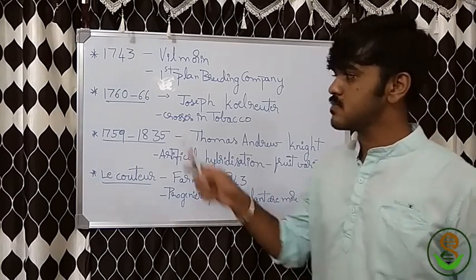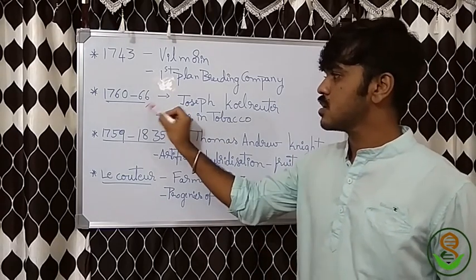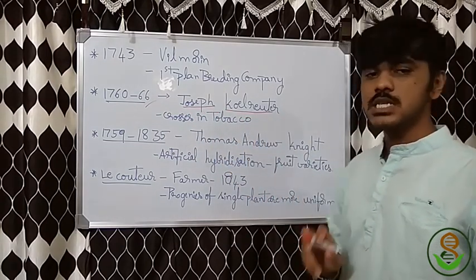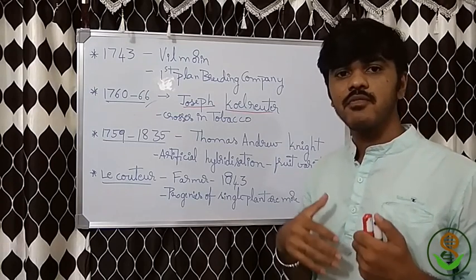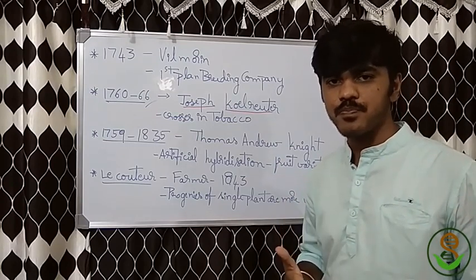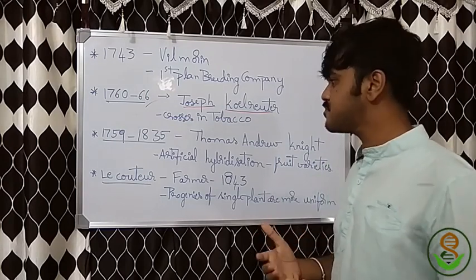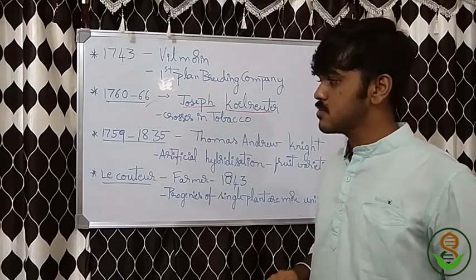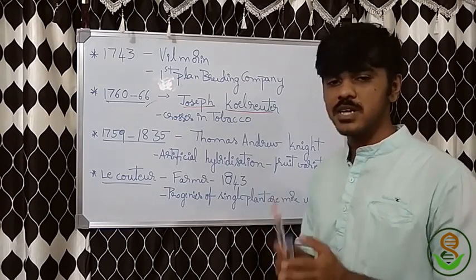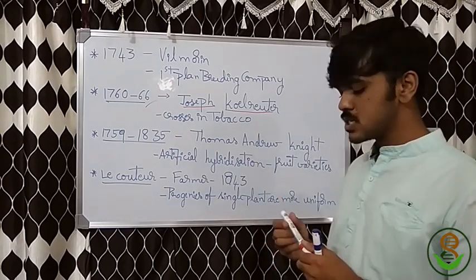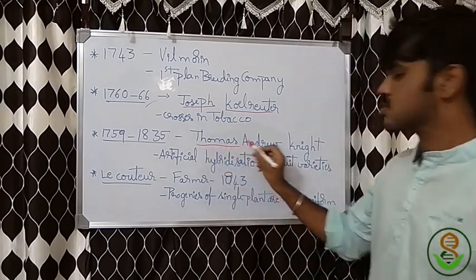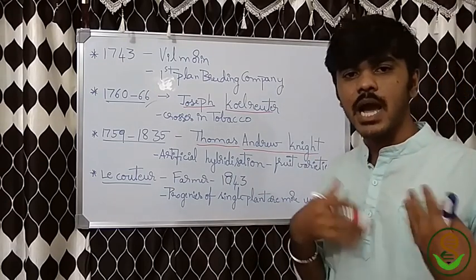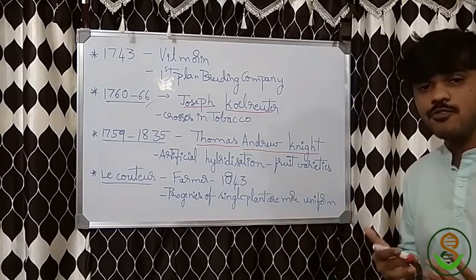From 1760 to 1766, Sir Joseph Kohlreuter made very extensive crosses in tobacco. Next, from 1759 to 1835, Sir Thomas Andrew Knight artificially hybridized plants and developed many fruit varieties. His work is very important in the historical point of view.